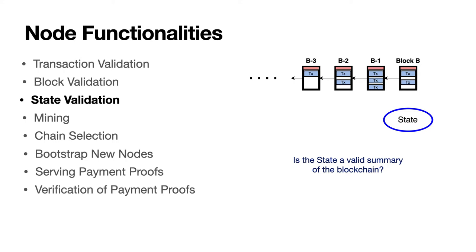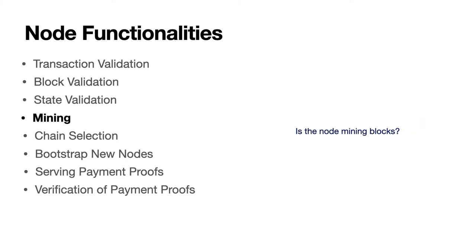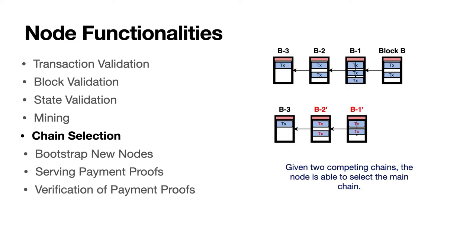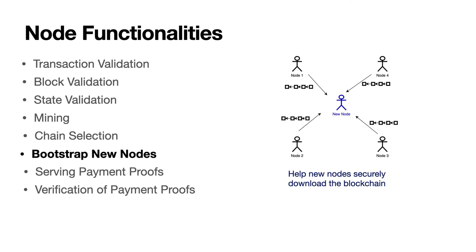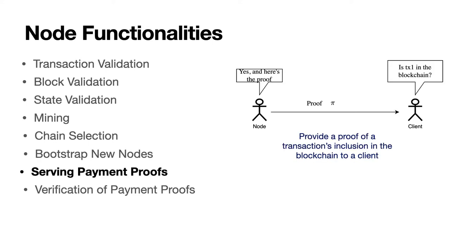Third, given a state, the node checks whether the state is a valid summary of the blockchain. Fourth, a node may be mining blocks for the blockchain. Fifth, given two competing chains, the node is able to correctly select the main chain. Sixth, when a new node enters the system, the existing nodes relay a copy of the blockchain securely to the new node. Seventh, when a client wants to query if a particular transaction is included in the blockchain, the node answers the query with a verifiable proof.